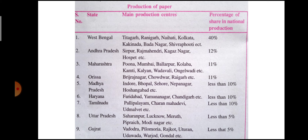Andhra Pradesh ranks second with 12% of total production. Its centers include Sirpur, Rajamahendri, Kagajanagar, Hospet, and others. Maharashtra ranks third. Its centers include Pune, Mumbai, Ballarpur, Kolaba, Kamthi, Kalyan, Badavali, and Angarwali.